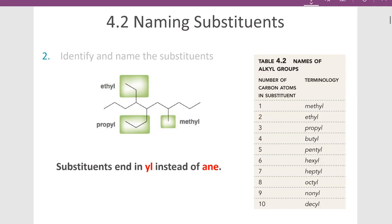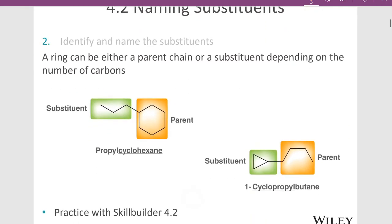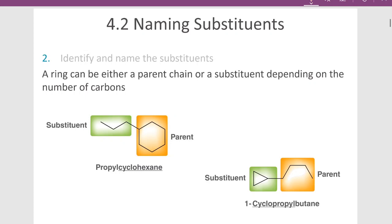To summarize the naming steps: for substituents, put -yl instead of -ane at the ending. Then arrange them alphabetically, assign a locant to each, and assemble the name. Identifying which is the substituent and which is the parent can be a little confusing, but the parent is almost always the longest chain — whether it's a ring or a longer open chain.